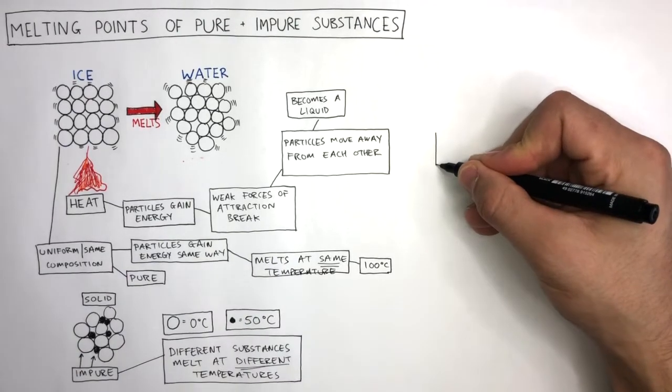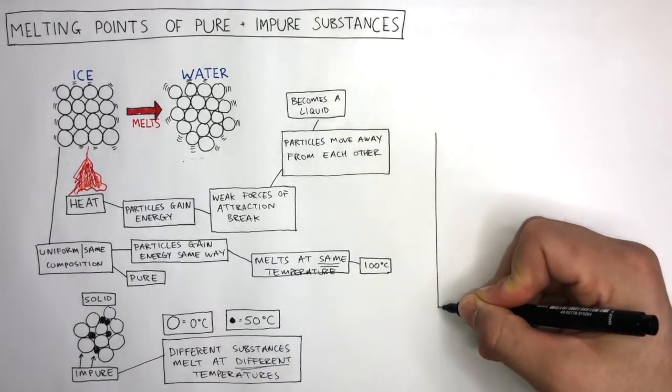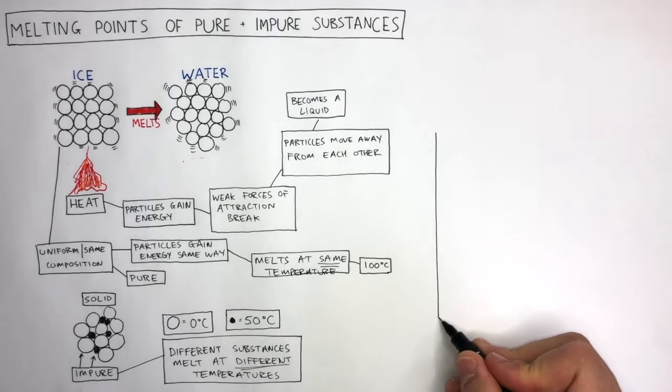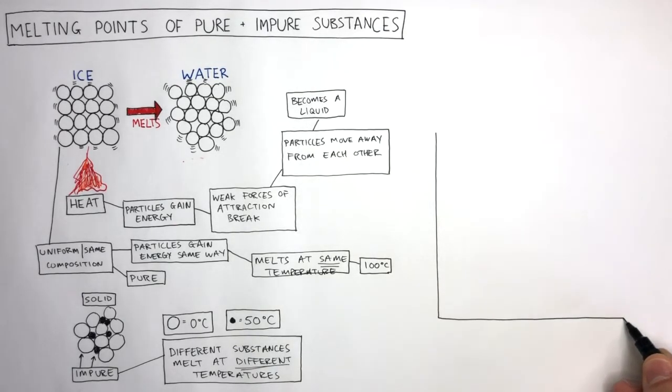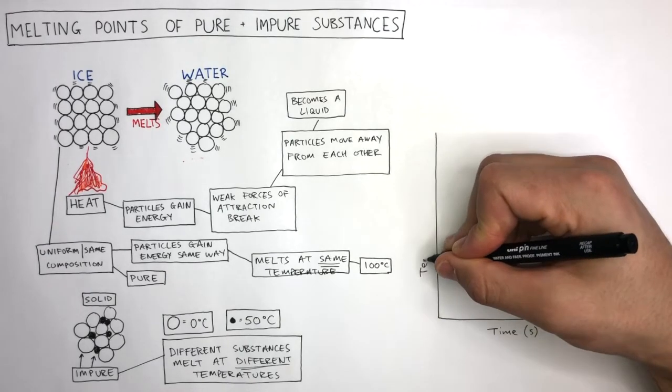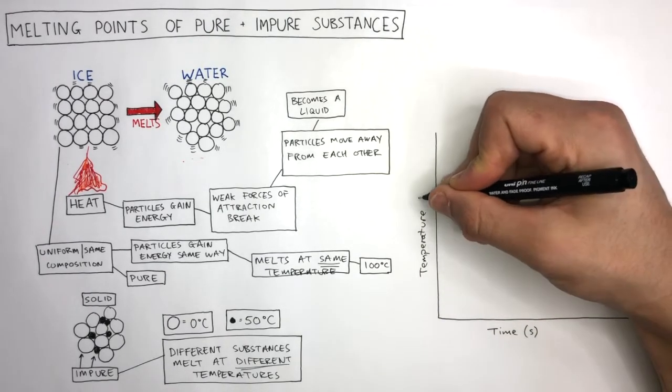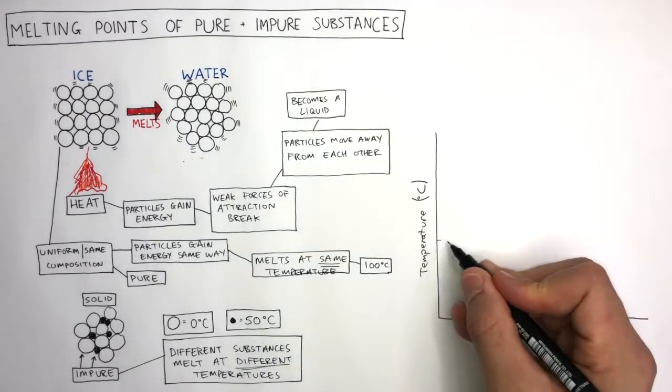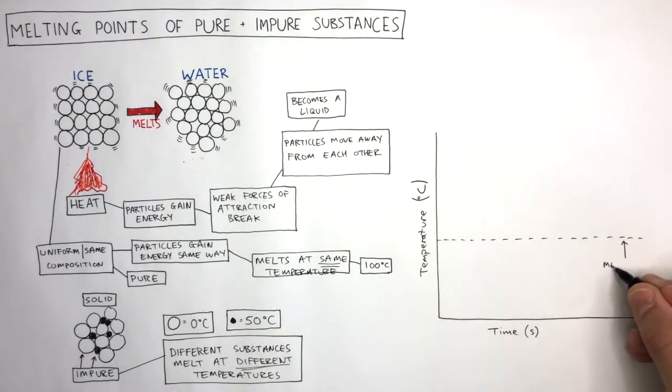We can use a graph to compare how the temperature changes in impure and pure substances as they are heated. On the x-axis is time and the unit is seconds. On the y-axis is temperature and the unit is degrees Celsius. This dashed line represents the melting point, which is the temperature at which a solid changes into a liquid.